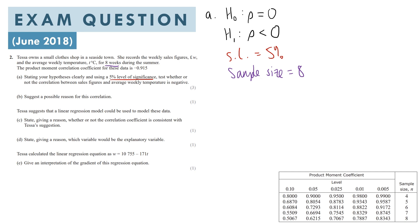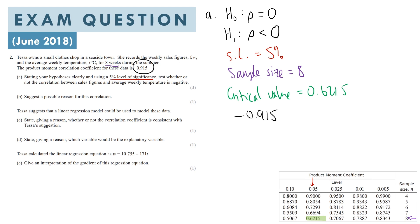Our null hypothesis is H0: rho equals 0 — there is no correlation. Our alternative hypothesis is H1: rho less than 0, to test for negative correlation. Our significance level is 5% and our sample size is 8, because the data was recorded for eight weeks. Looking at the table, with n equals 8 and the 5% significance level, our critical value is 0.6215.